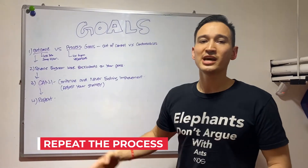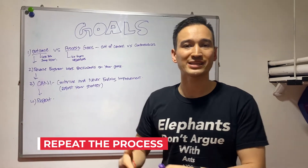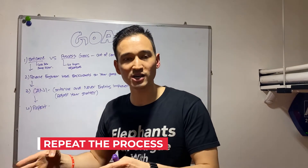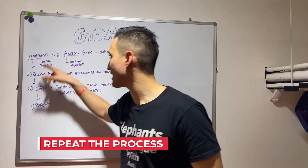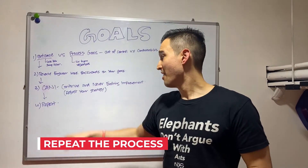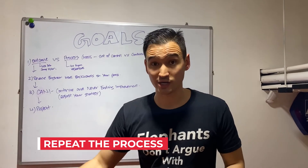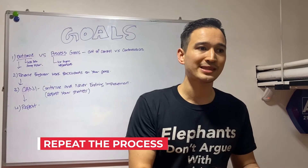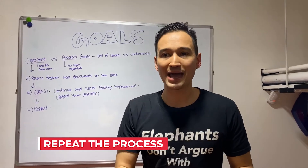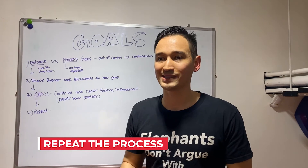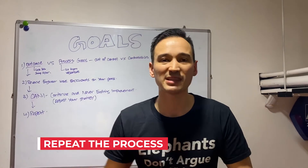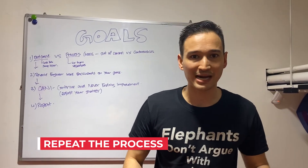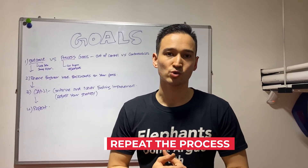The last part is to repeat the process. I set outcome goals and, more importantly, a bunch of process goals. Then I reverse engineer the outcome goal. Then I reevaluate my journey, my process, my reverse engineering — asking what's taking a lot of time without great results, and what is very time-efficient and getting me the most results. I keep those and throw away the things wasting my time, then bring in new things to test out.